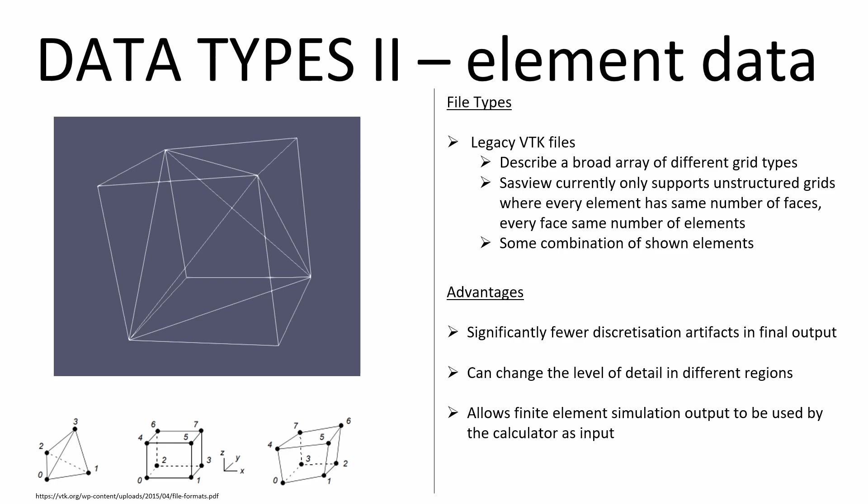At other times, it may be easier to represent the scattering length densities on an irregular grid, such as output from a finite element simulation. This can allow areas of little interest to be described with much less detail, saving computation time. Additionally, for low-resolution samples this avoids discretisation errors, although at the cost of a more time-intensive algorithm. SASView supports these grid types in unstructured grid datasets of legacy VTK files — the file format of the Visualisation Toolkit, which is supported by many other programmes such as NetGen, which was used to generate the files used here.